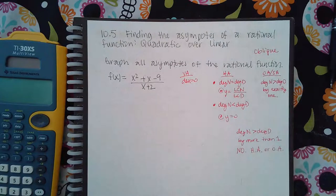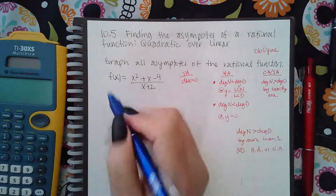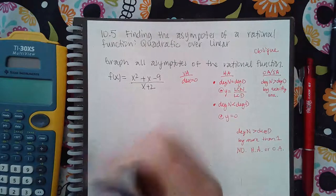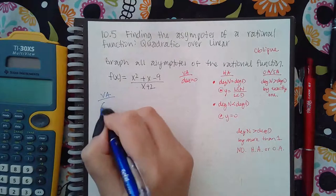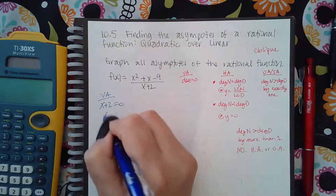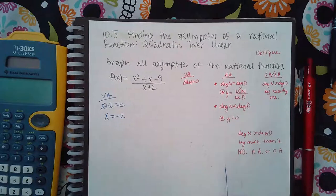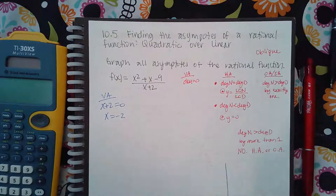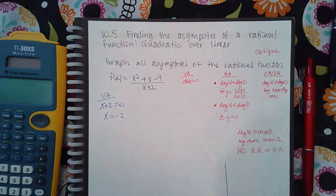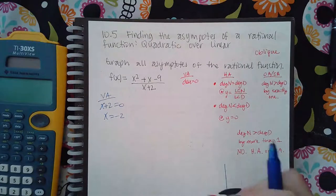So for the vertical asymptotes, I'm going to take my denominator and set it equal to zero. I get x equals negative two. On my graph, here's negative two — I'm going to draw my vertical asymptote.